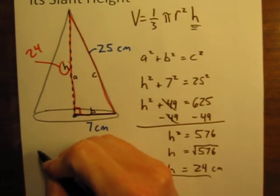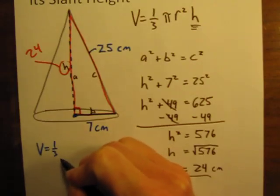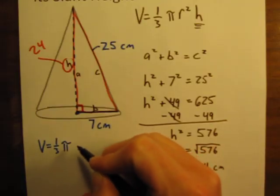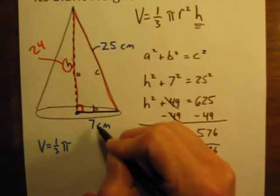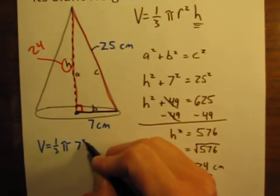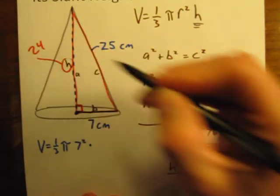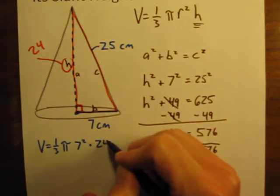So let's write down our formula then. Volume is equal to one third times pi times the radius squared, the radius is 7, 7 squared, times the height, which we just calculated to be 24.